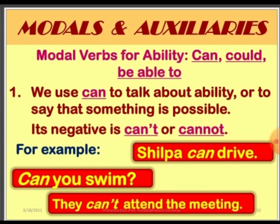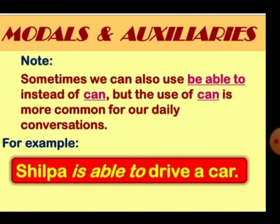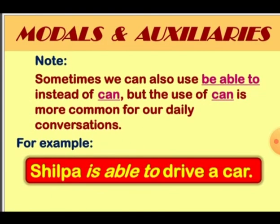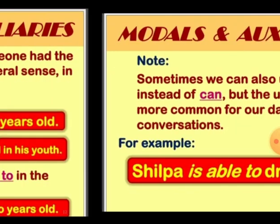We use 'can' to talk about ability or to say that something is possible. Its negative is 'can't' or 'cannot.' Sometimes we can also use 'be able to' instead of 'can,' but the use of 'can' is more common for our daily conversations.